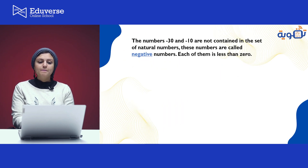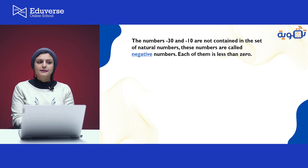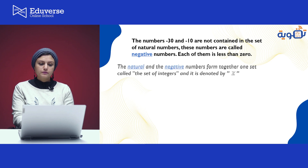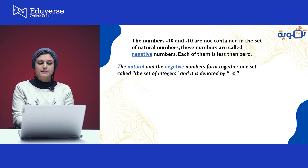The numbers minus 30 and minus 10 are not contained in the set of natural numbers. These numbers are called negative numbers — each of them is less than zero. So we know now that any number less than zero is called a negative number. The natural and the negative numbers form together one set called the set of integers, denoted by the capital Z.